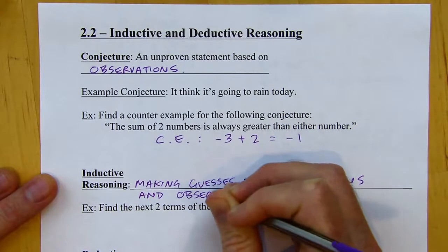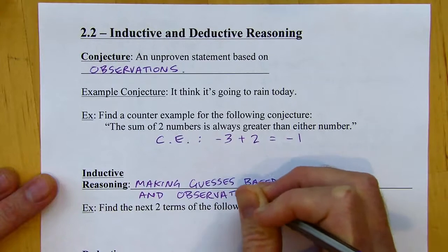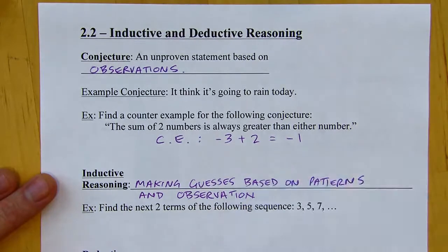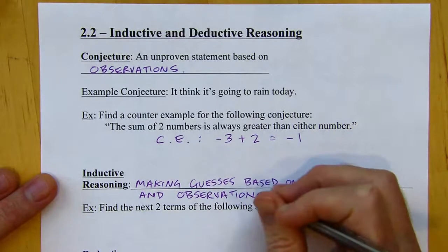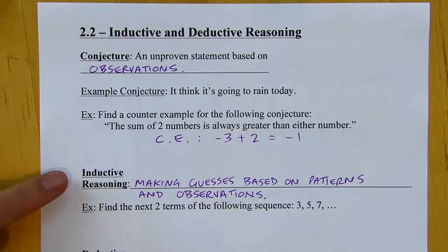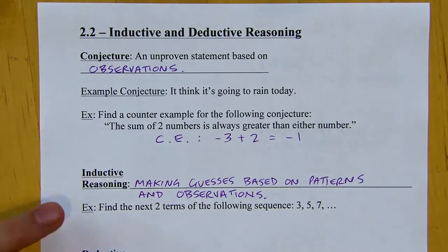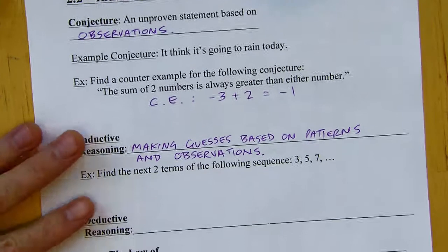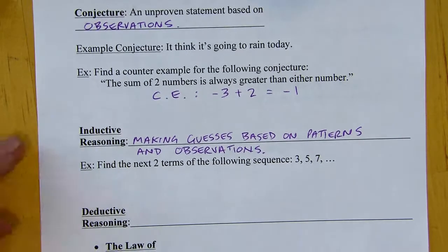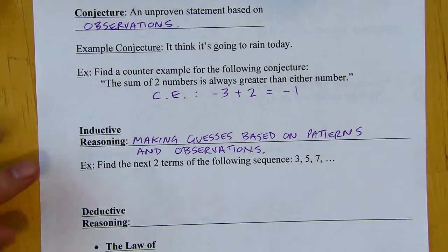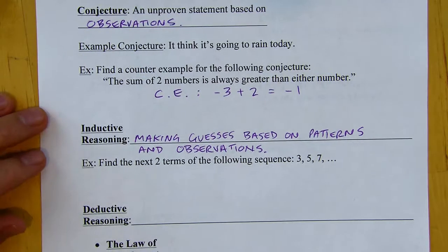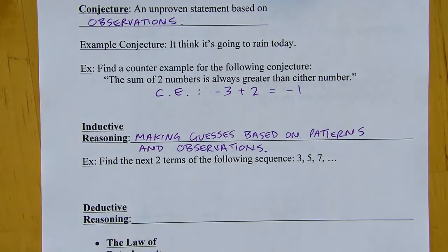There are two basic kinds of reasoning: inductive reasoning and deductive reasoning. We're going to spend most of our time in this chapter and in geometry using deductive reasoning, but we do use inductive reasoning all the time. There's nothing wrong with inductive reasoning — it's just not a surefire thing like deductive reasoning is.